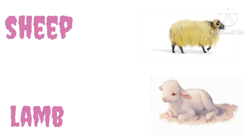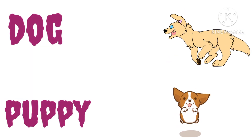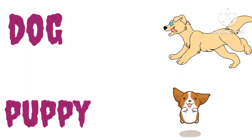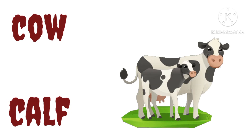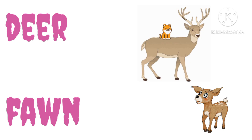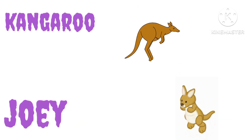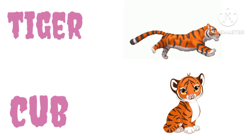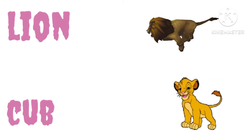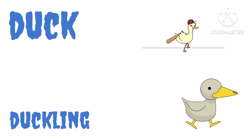Sheep and lamb, dog and puppy, cow and calf, deer and fawn, kangaroo and joey, tiger and tiger cub, lion and lion cub, duck and duckling.